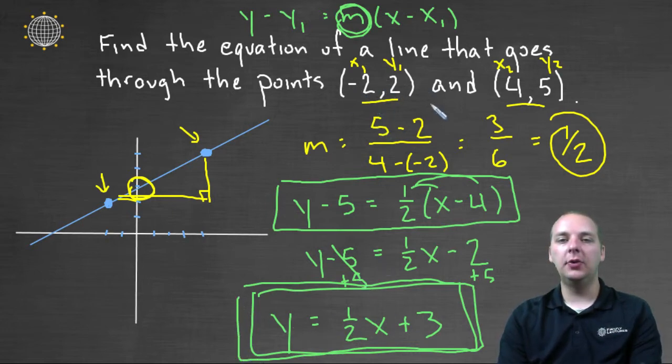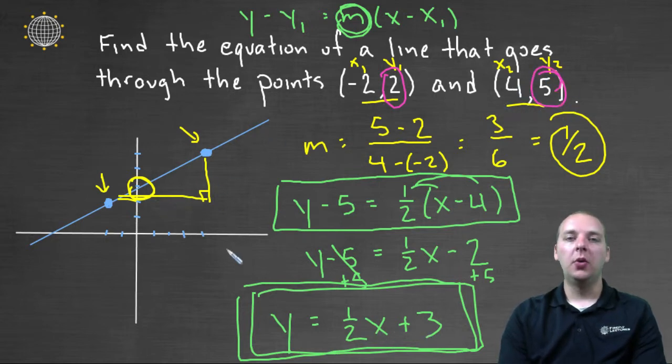This line goes through negative two, two, and it goes through four, five. You can check this by taking these x values and plugging them in and see if you get these y values. And actually we have time. Let's do it real quick. Let's plug in negative two. One half times negative two, that's negative one. Negative one plus three makes two. Perfect. That means this point is on my line. And let's plug in four. A half times four is two. Two and three make five. So that point is also on my line. So I'm one hundred percent confident that the equation of this line represents this graph. And so we're done.